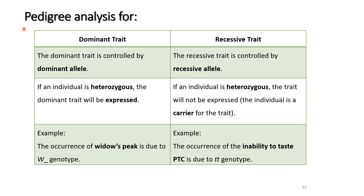The differences between pedigree analysis for dominant traits and recessive traits are as follows. First, dominant traits are controlled by dominant alleles, while recessive traits are controlled by recessive alleles. Second, for dominant traits, if an individual is heterozygous, the trait will be expressed. But for recessive traits, if an individual is heterozygous, the trait will not be expressed — the heterozygous individual is considered a carrier. For example, widow's peak occurs with genotype homozygous dominant or heterozygous, whereas the inability to taste PTC occurs only with homozygous recessive genotype tt.